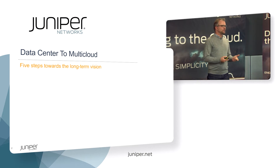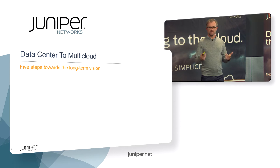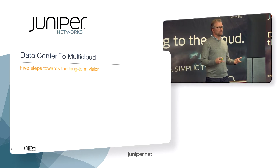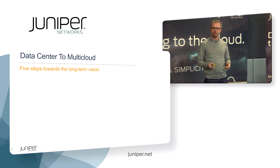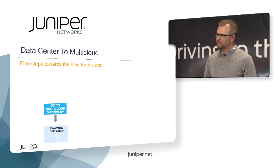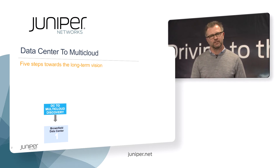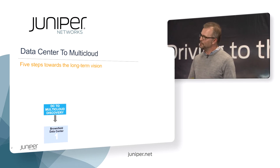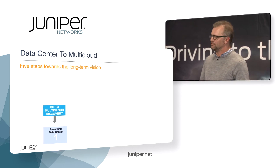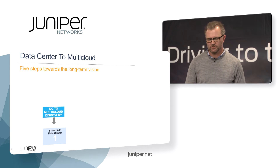On this path to multi-cloud, we have five steps that we've laid out — conversation starters, ways to look at your processes and see what we can optimize and make a little simpler. Step one is we're going to look at your brownfield data center and think about the network architectures that might be there — things like IP fabric, cloth fabrics, simplified data center architectures.